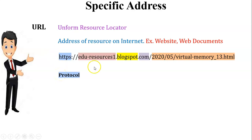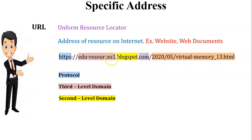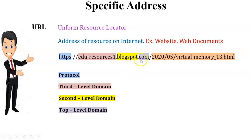The next part of a URL is the third level domain. In this URL the third level domain is edu-resources1. The next part of the URL is the second level domain — here it is blogspot. After the second level domain it is connected with the top level domain, here it is .com, which means the commercial domain. After the top level domain, the remaining part is the file path, which is where our file is stored on the server.